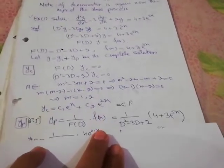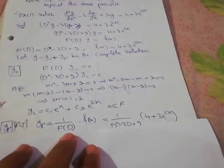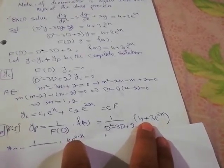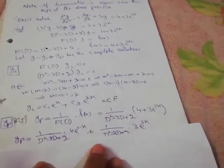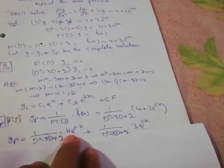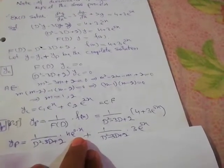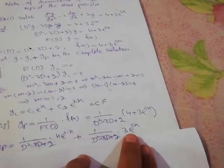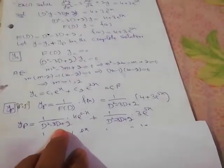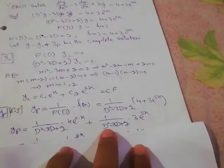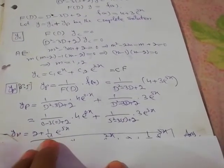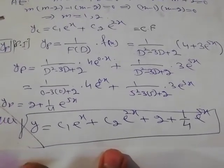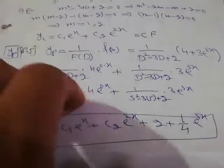For the particular integral, we write (1/(D² − 3D + 2)) times (4 + 3e^(5x)). We split into two terms: 4e^(0x) and 3e^(5x). Replacing D by 0 in the first term and D by 5 in the second term, we get 2 plus (1/4)e^(5x). The complete solution is y = c₁e^x + c₂e^(2x) + 2 + (1/4)e^(5x).